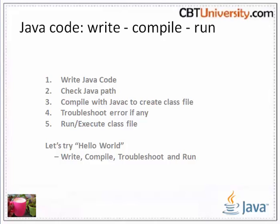One thing to remember is that every Java application must have an entry point — that is the main method — and it must be static, declared public, and accept an array of strings. The main method never returns a value; it must return void.